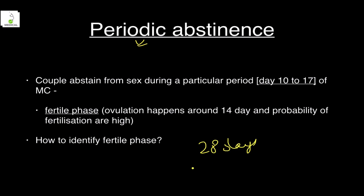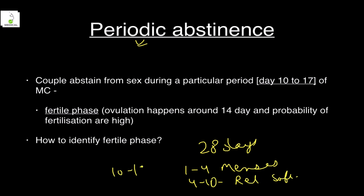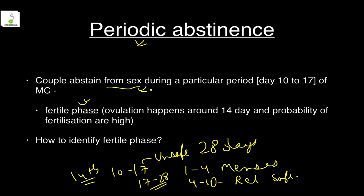Periodic abstinence: in a 28-day cycle, days 1–4 are menses days with bleeding; days 4–10 are a relatively safe period; days 10–17 are considered unsafe because ovulation usually happens on the 14th day; and days 17–28 are again a relatively safe period. In the fertile phase the couple abstains from having sex because ovulation happens around day 14.